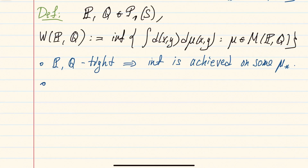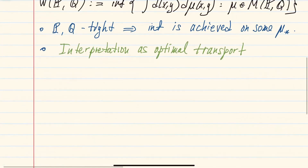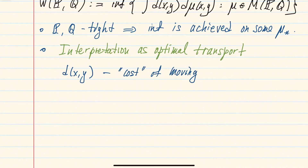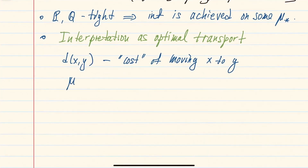The next comment is the common interpretation of this quantity as optimal transport. In this interpretation, one thinks of the metric function as a cost of moving a unit mass at point x to point y. These measures mu over which we optimize are viewed as a sort of transport plan of moving a distribution P into a distribution Q. If you think of P as a distribution of mass over the space, then this coupling — this measure mu with marginals P and Q — can be viewed as a transport plan of moving one pile of mass into another.